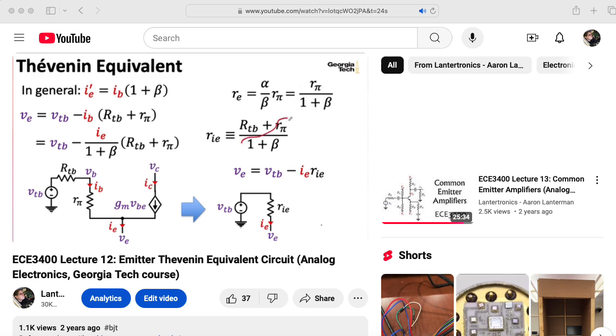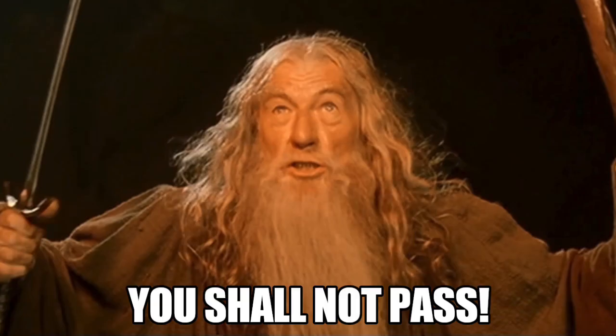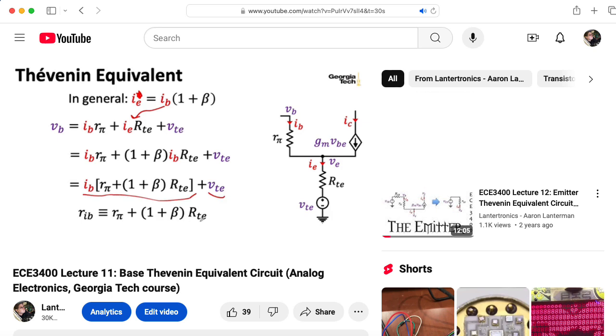All in all, that was a lot simpler than computing the Thevenin equivalent circuit looking into the emitter of a BJT. Because in that case, we had to worry about current flowing through the base. Here, nothing flows through the gate. So we don't need an equivalent circuit looking into the gate the way we needed a circuit looking into the base of a BJT.